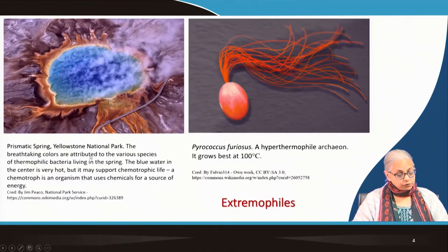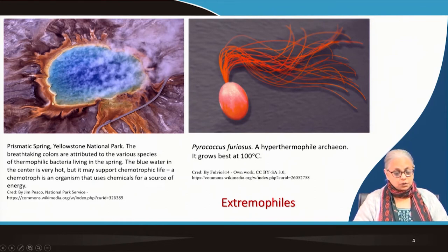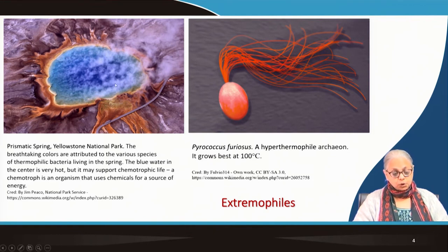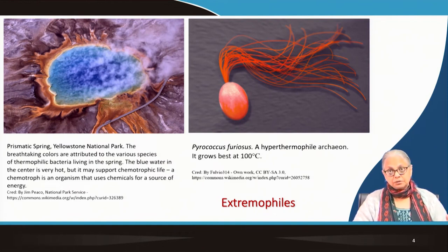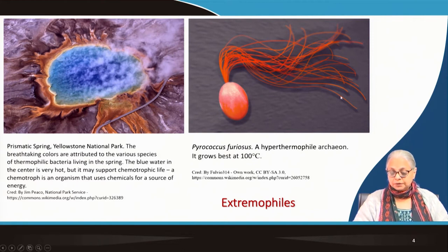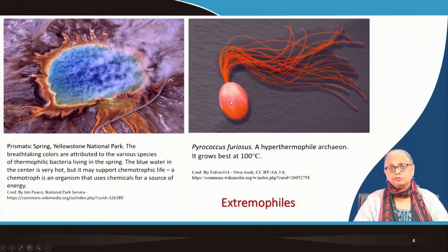Here we have a boiling water spring from Yellowstone National Park. All the colours are due to different species of thermophilic bacteria living in that particular spring. The blue water in the centre is extremely hot — it's boiling — but it does not prevent particular species of bacteria from growing in it. Here's another example of a hyperthermophilic archaeobacteria: Pyrococcus furiosus, whose optimum temperature for growth is 100 degrees centigrade.